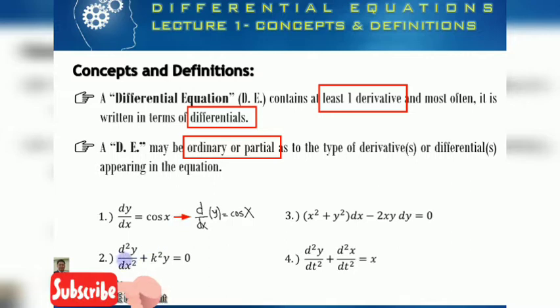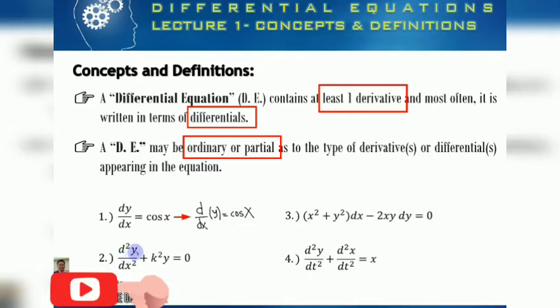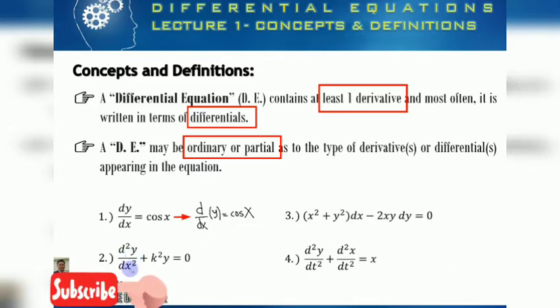For the second example, we have the second derivative of y with respect to x equal to cosine x.